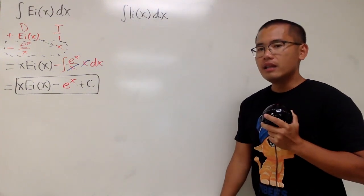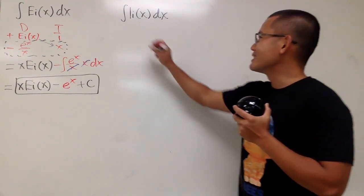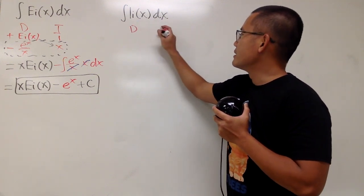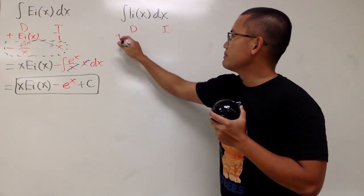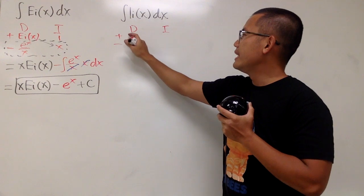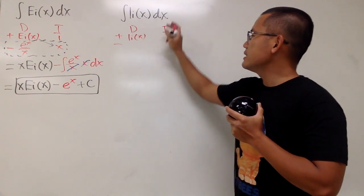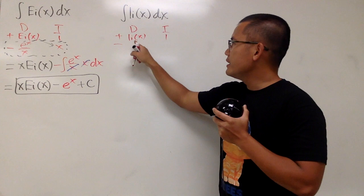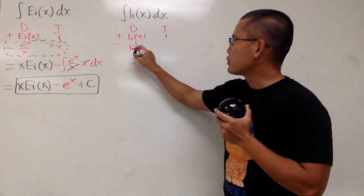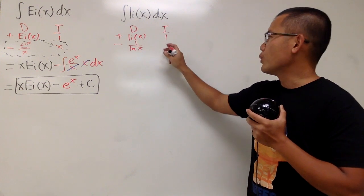Now, integrating li(x), we are going to do the same thing and see what happens. So let's go ahead and put down d and then i, plus-minus on the side to get ready, and differentiating li and then integrating 1. Differentiating li, we get 1 over natural log of x. Integrating 1, we get x.